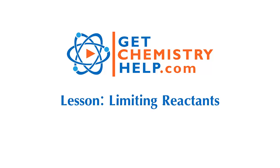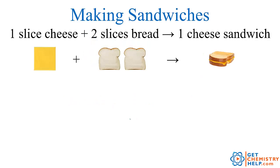A limiting reactant problem is a reaction in which you have too much of some reactants and not enough of another reactant. The best way to illustrate this is by using a simple analogy. We're going to make cheese sandwiches. Our reaction is: one slice of cheese reacts with two slices of bread to produce one cheese sandwich. So our stoichiometric ratio is one to two to one.